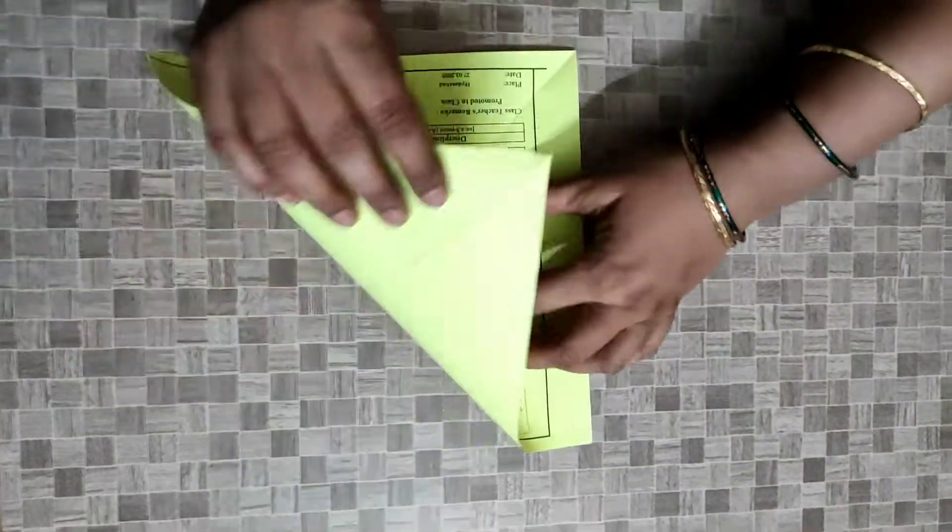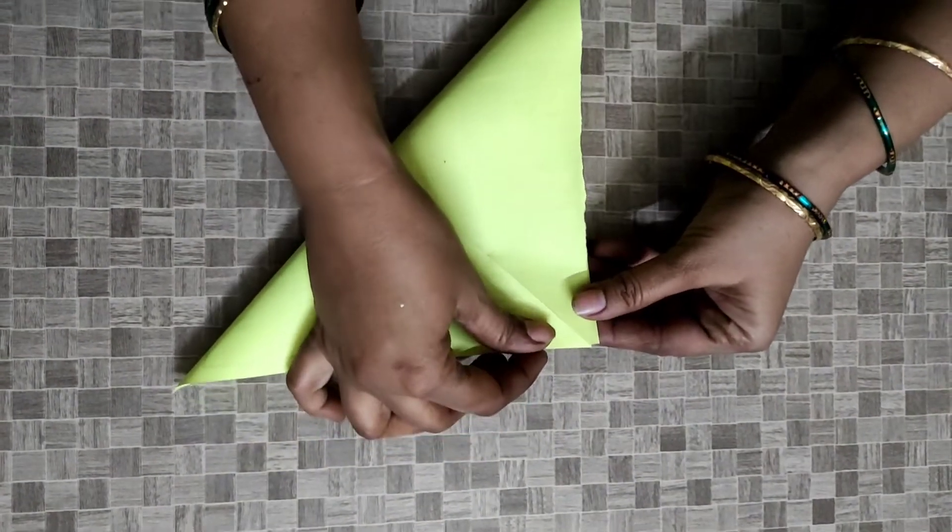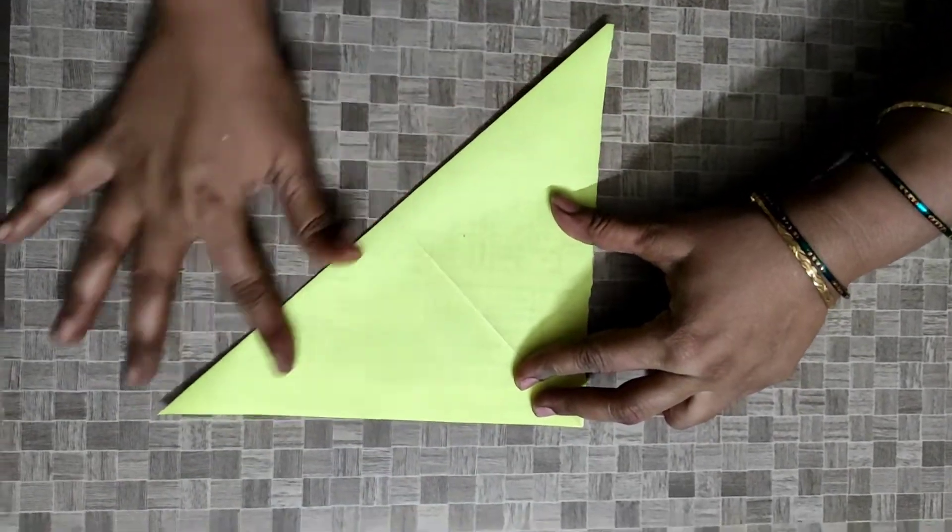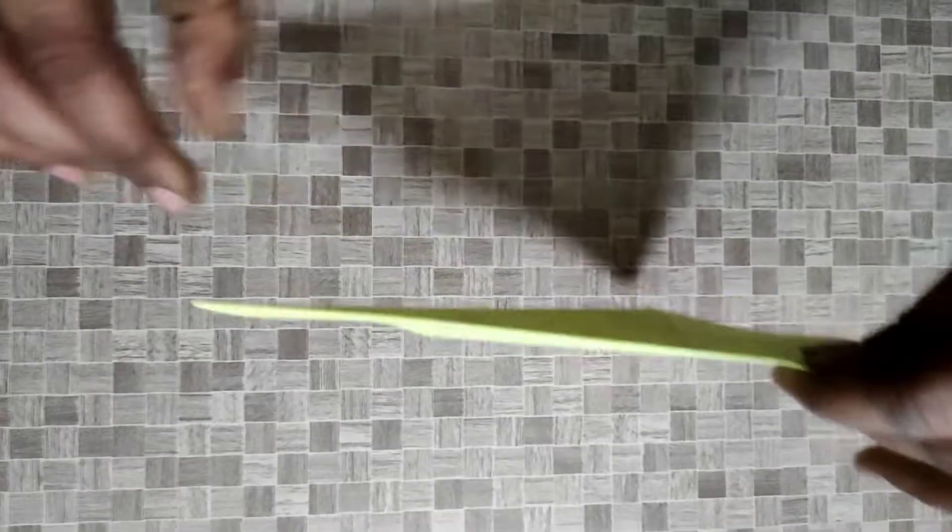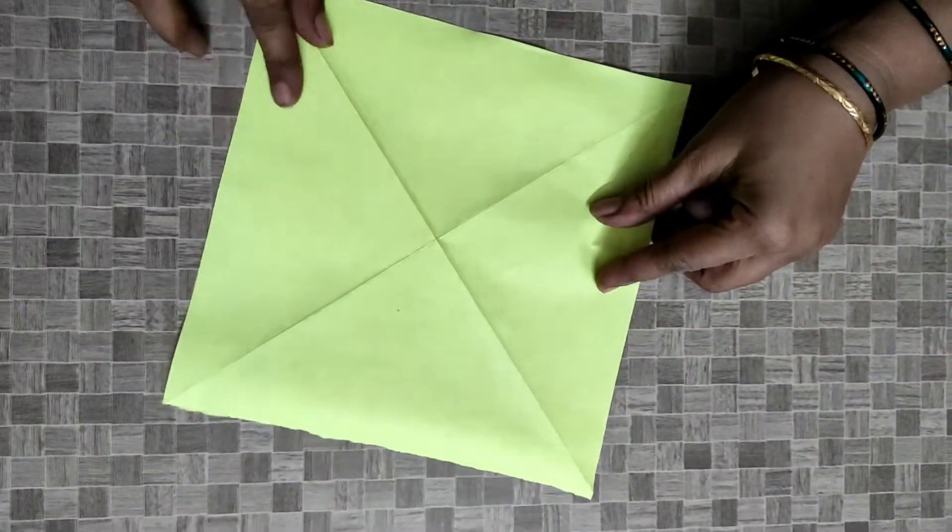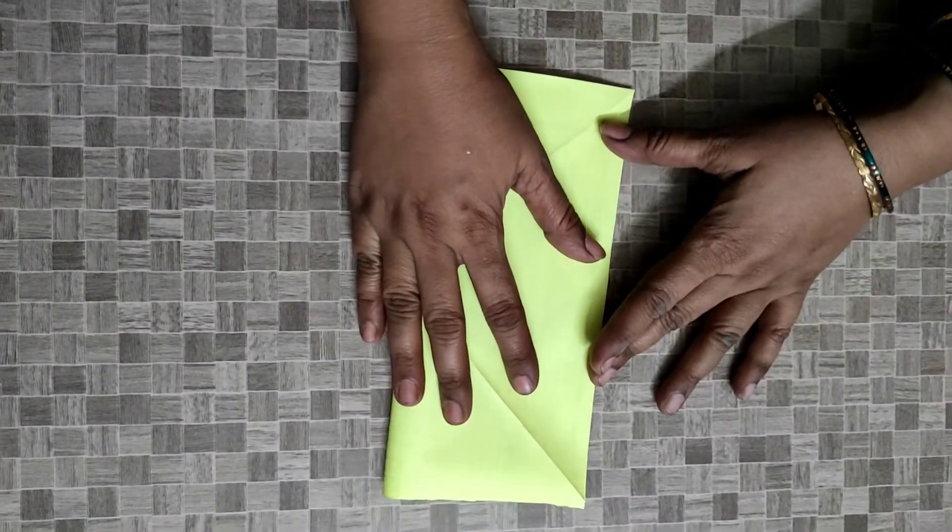So again fold it in half like this. Now you can see the center mark here. Now fold it horizontally.